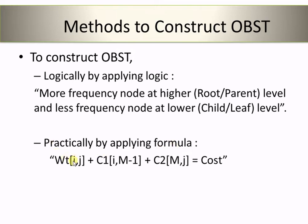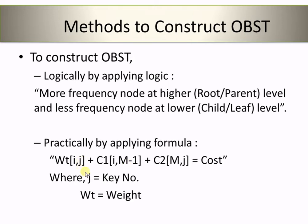The second method is: practically, we can construct the optimal binary search tree by applying some formula. The formula uses weight, and we need to calculate C1 and C2 — two values we take from the cost matrix to find out the final cost. Where J is nothing but the key number which is currently the root node. W(i,j) is the weight for i,j and M is the current root node. I will explain all these things once we use the formula further in this video.